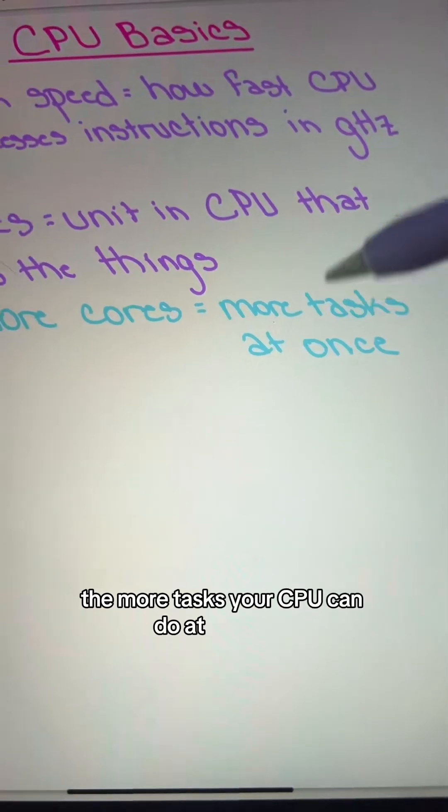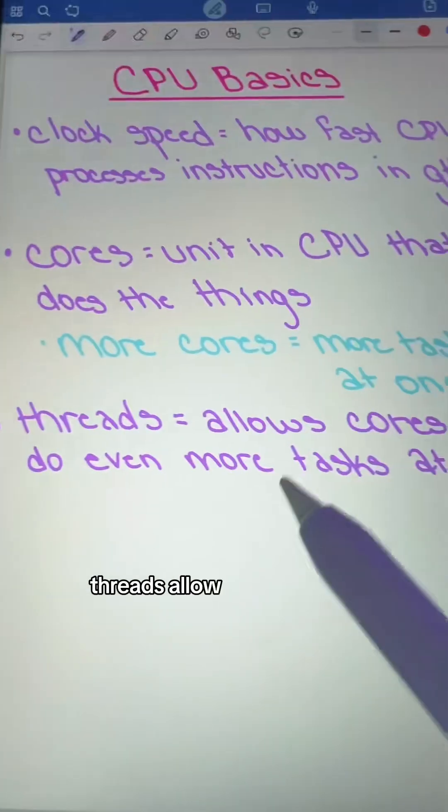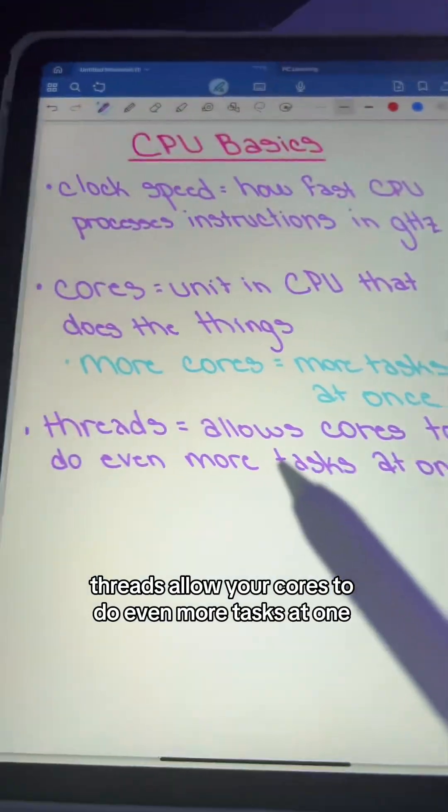the more tasks your CPU can do at one time. And third, you also have threads. Threads allow your cores to do even more tasks at one time.